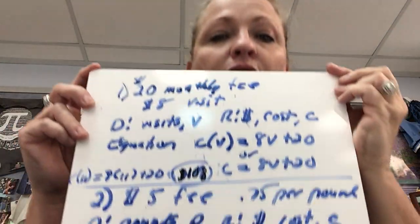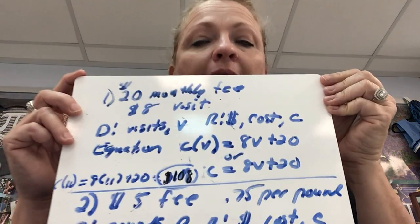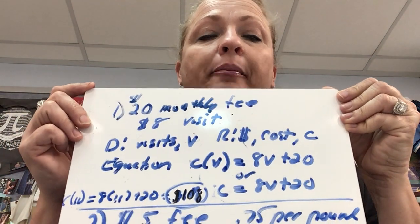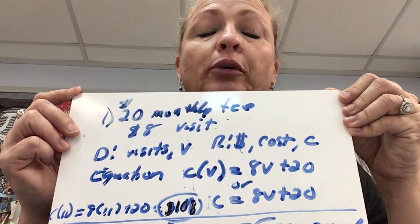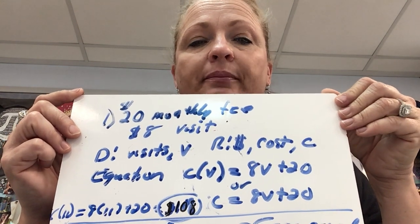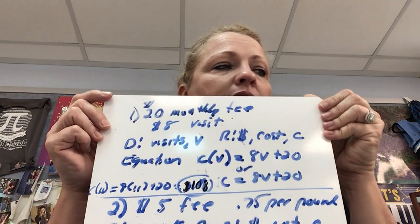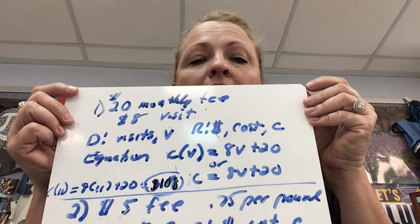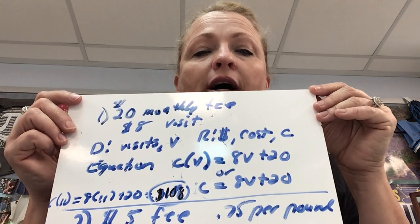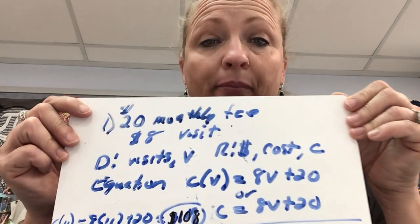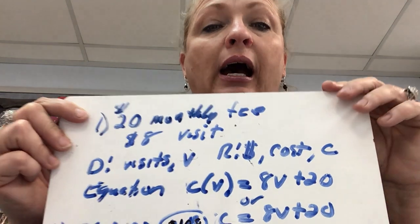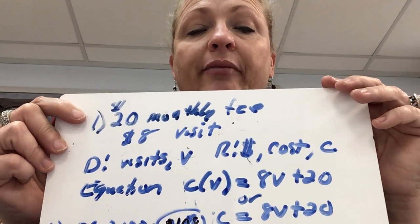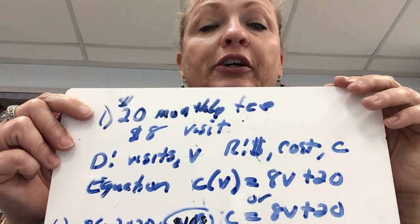Today we are going to write linear equations of applications. As you need to stop the video to read the problem, please do that. The first question talks about going to the gym and deciding upon an equation that describes the cost. When I introduced this chapter, I encouraged you to read the problem through once and then read it again and underline what you need to pull out.